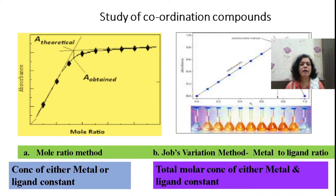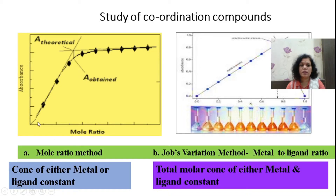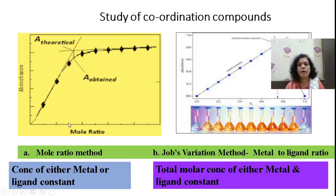One is the mole ratio method and one is Job's continuous variation method. In the mole ratio method, either the metal or ligand concentration is kept constant, and we measure the absorbance. We can conclude from this result what mole ratio is required to form the complex — 1:1, 1:2, or 1:3.